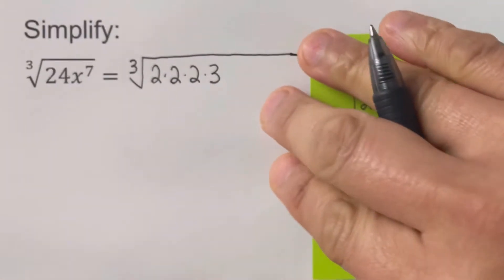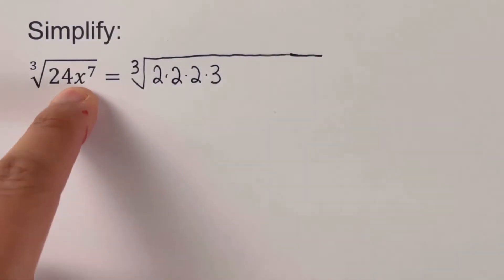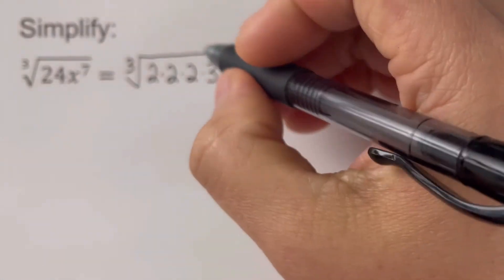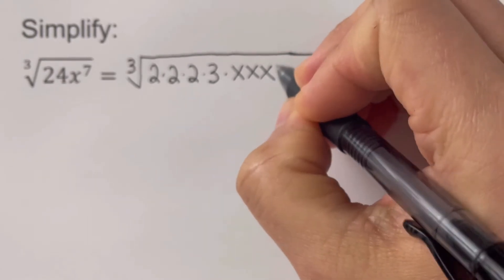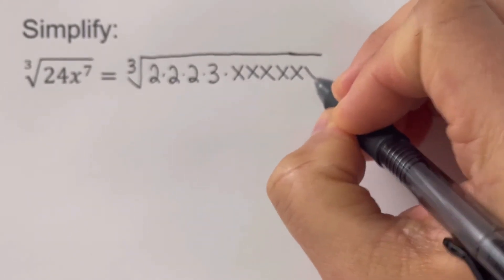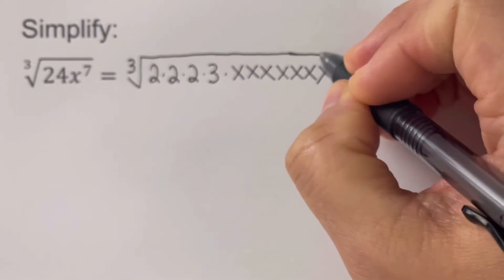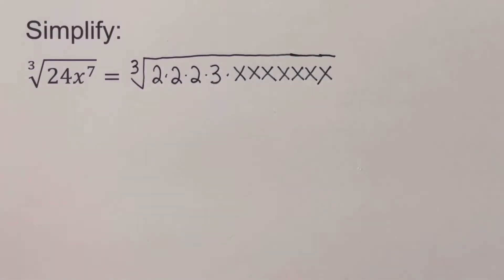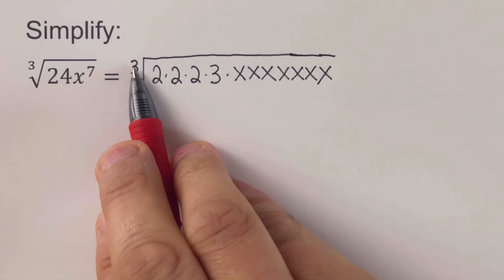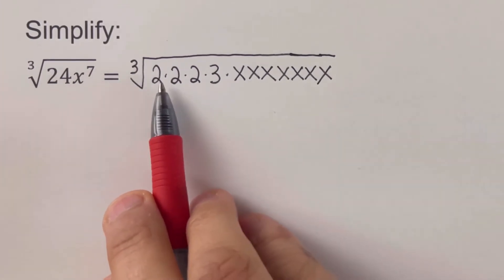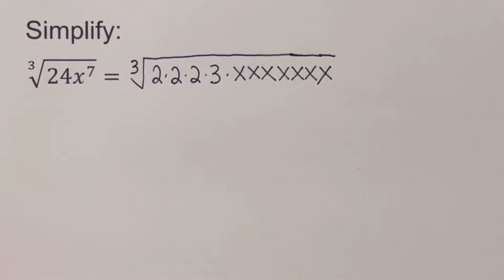We also expand the variable x to the 7th, writing out all seven x's. The second step is to group the expanded form based on the index. Since our index is 3, we are going to group this expanded form into groups of 3.